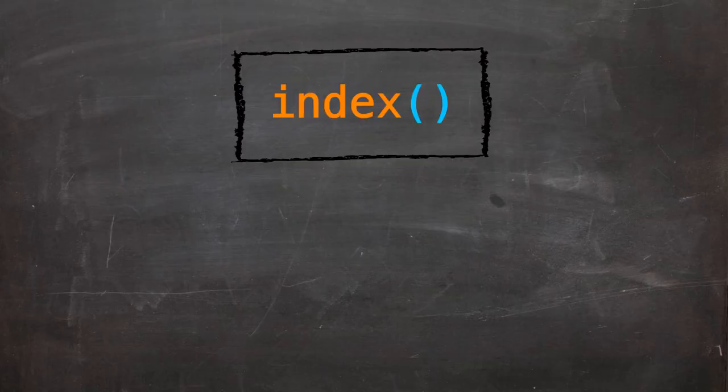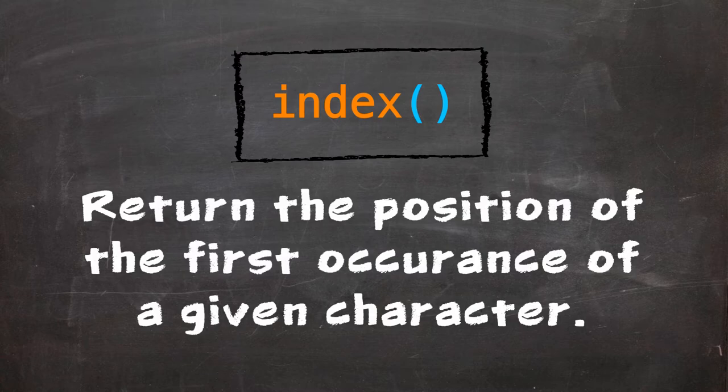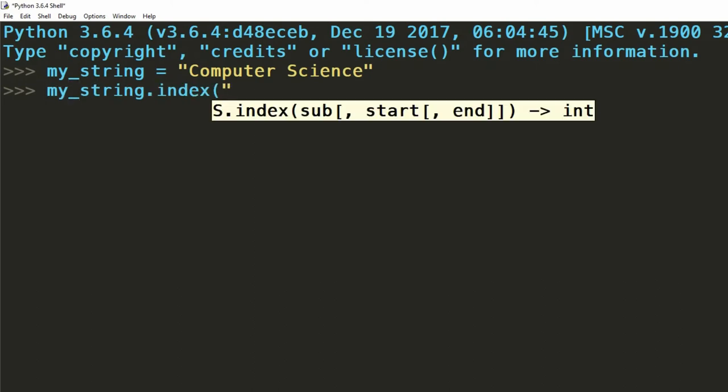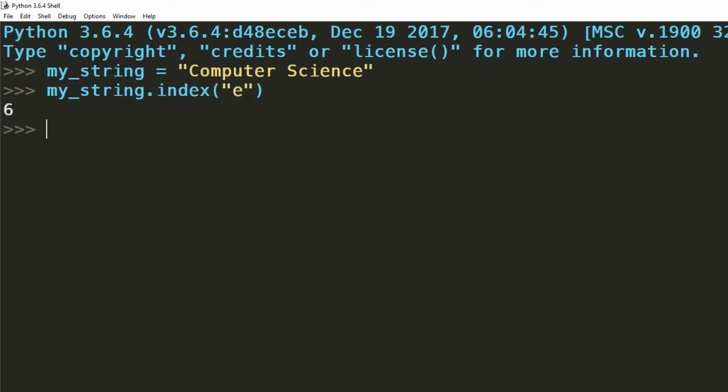The index function returns us the position of the first instance of a character that we pass into it. Let's say we wanted to find the position of the first e in computer science. We do so as demonstrated on screen. The number returned is the index of that character.